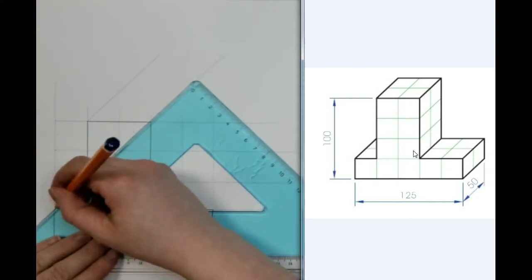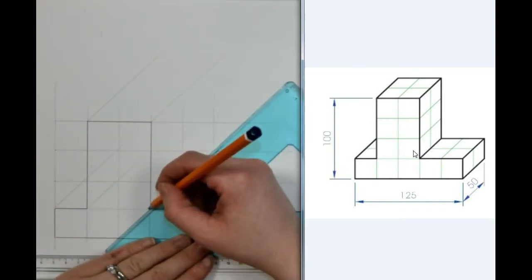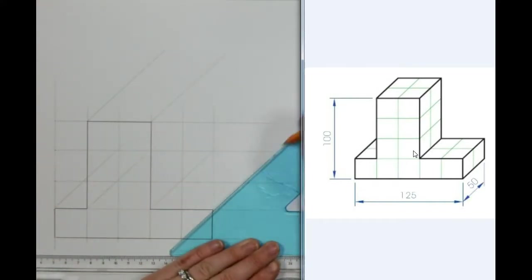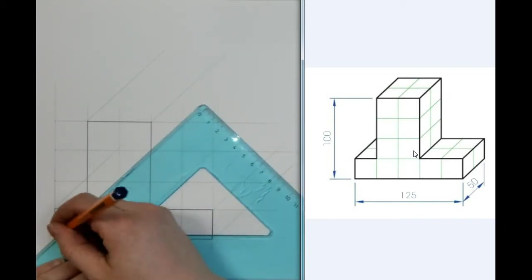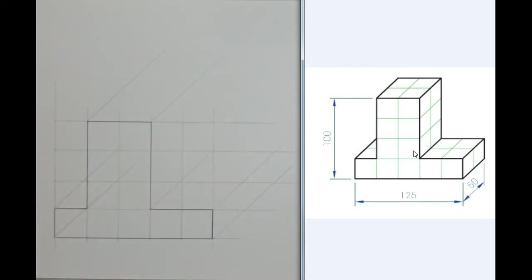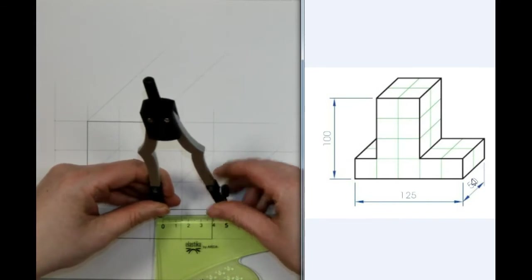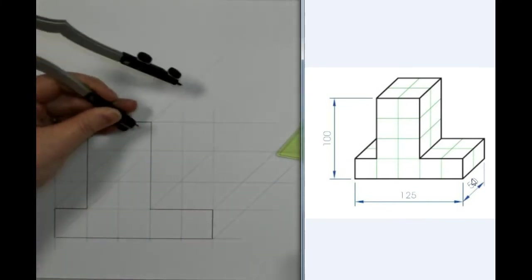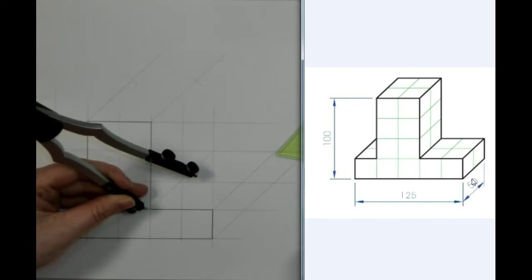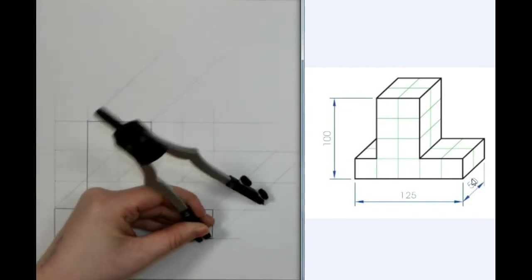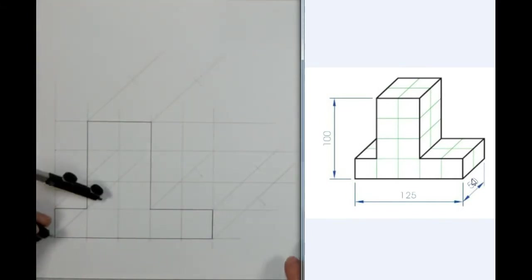Lovely. So, I've drawn back from all my points. Now, as I can see from my question, my thickness is 50mm. So, on my compass, I'm going to get 50mm, and from each point, I'm going to go back the way. So, 50mm. Lovely.